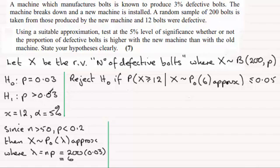To do this hypothesis test, we've got to use a suitable approximation, and that's referring to the binomial distribution. Since n is greater than 50—it's 200 in this case—and P is less than 0.2, these are the conditions that allow you to approximate a binomial to a Poisson.